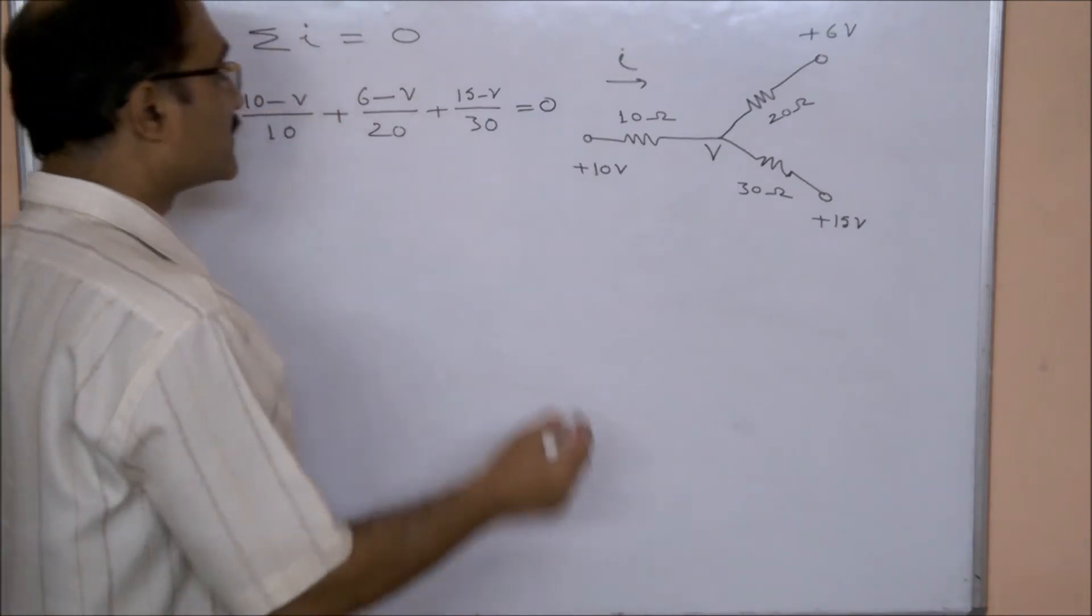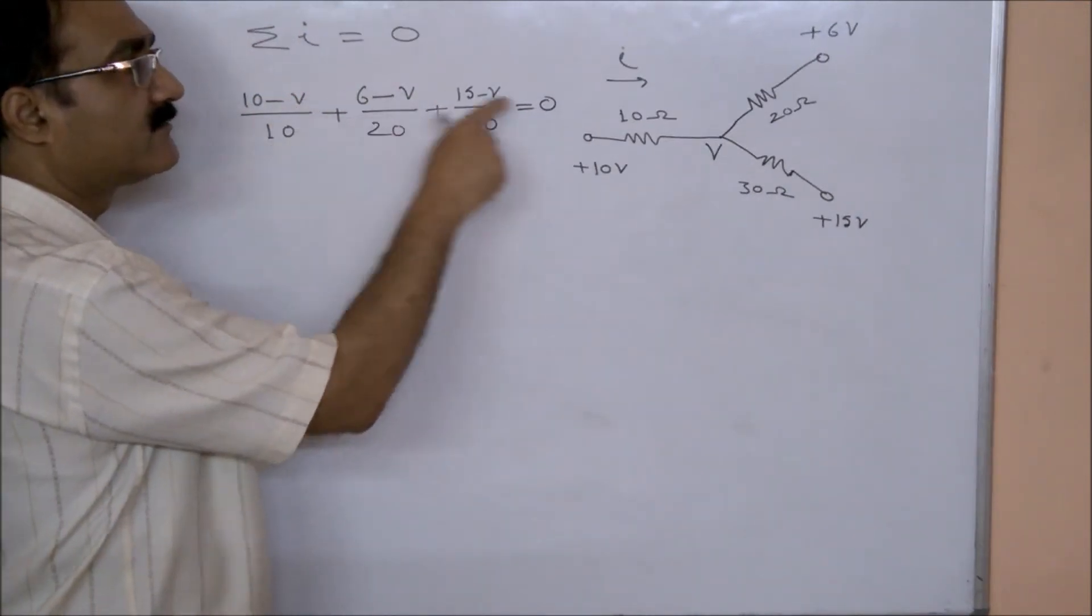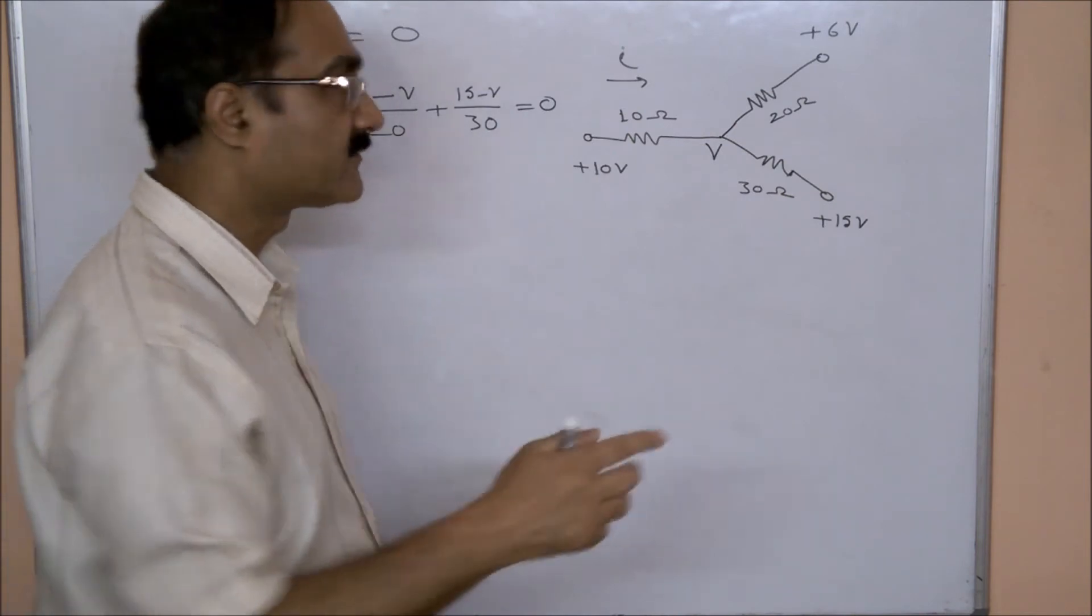So as you can see, in this equation there is only one variable V, so from there you can find out V.